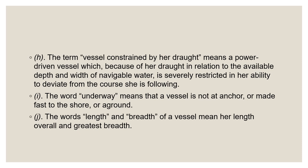Part J covers length overall, which can be visualized by bringing the bow — excluding bowsprits — up against a vertical wall and then bringing another vertical wall up against the stern; the distance between the two walls is the length overall. Other lengths commonly referenced elsewhere include waterline length, measured between the points where stem and stern enter the water, and length between perpendiculars, measured from where the stem intersects the design waterline to the centerline of the rudder post aft. Note that the greatest breadth does not always occur amidships.